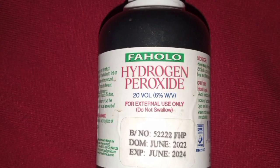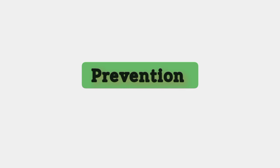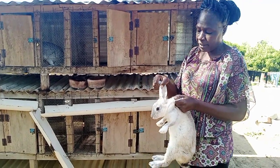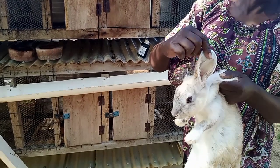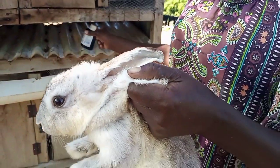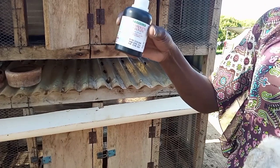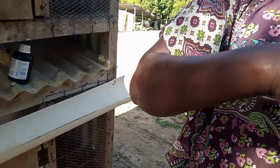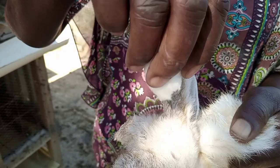Disease one: ear canker, or mange or ear mite. How to treat it? Use hydrogen peroxide and wound powder, for example Negasunt. Prevention: once in a while put two drops of hydrogen peroxide in each ear for all the rabbits on your farm. This rabbit was infected by ear canker as you can see, and it is undergoing treatment by use of hydrogen peroxide. Dip some cotton wool in hydrogen peroxide and apply it to the ear twice a day.